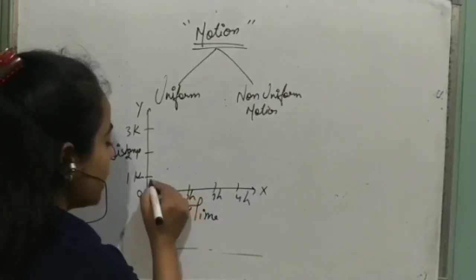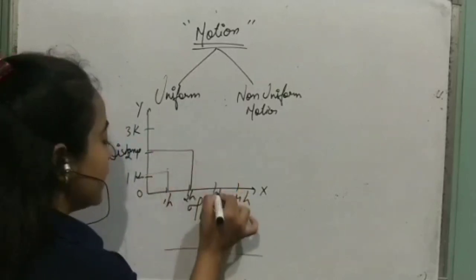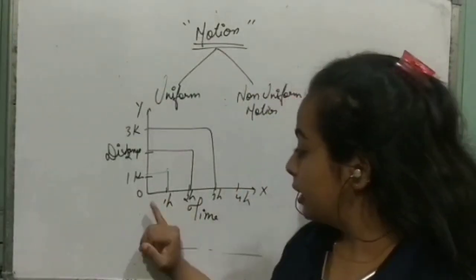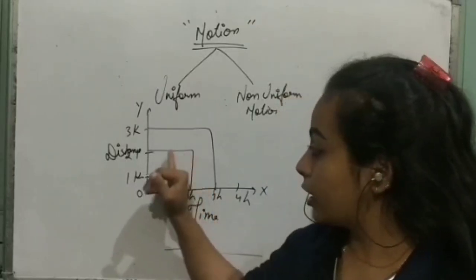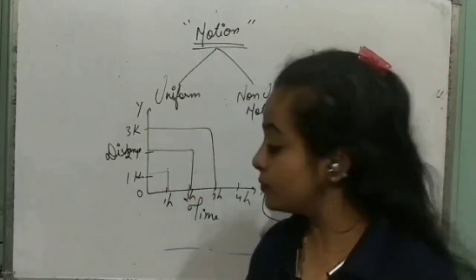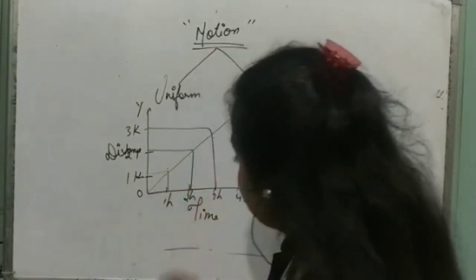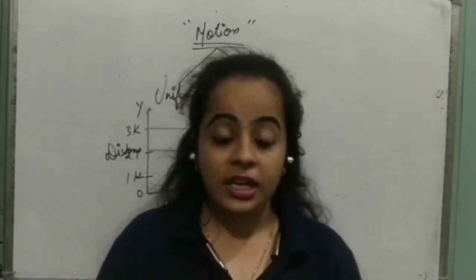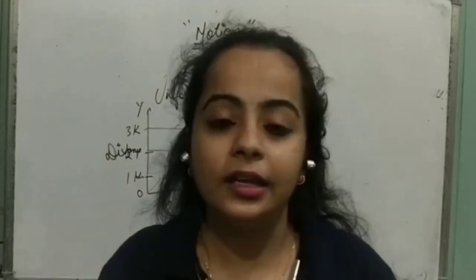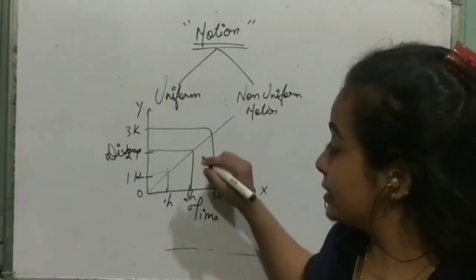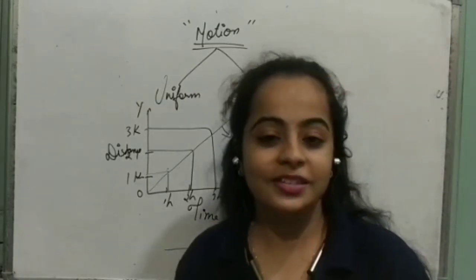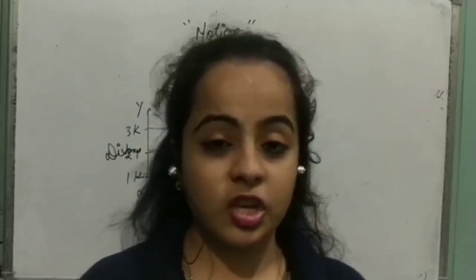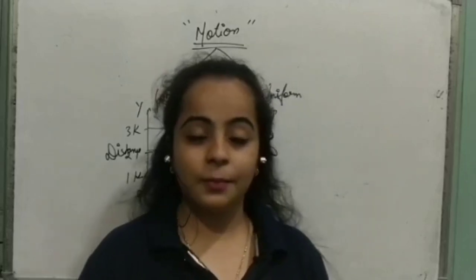Suppose in 1 hour I am covering 1 km distance, in 2 hours I am covering 2 km, in 3 hours I am covering 3 km. What you can observe is that the line on the graph is constant — a straight line. This means the object is covering equal distance with equal intervals of time, so speed is constant. Uniform motion is that in which the speed remains constant, and a body covers equal distance with equal intervals of time.